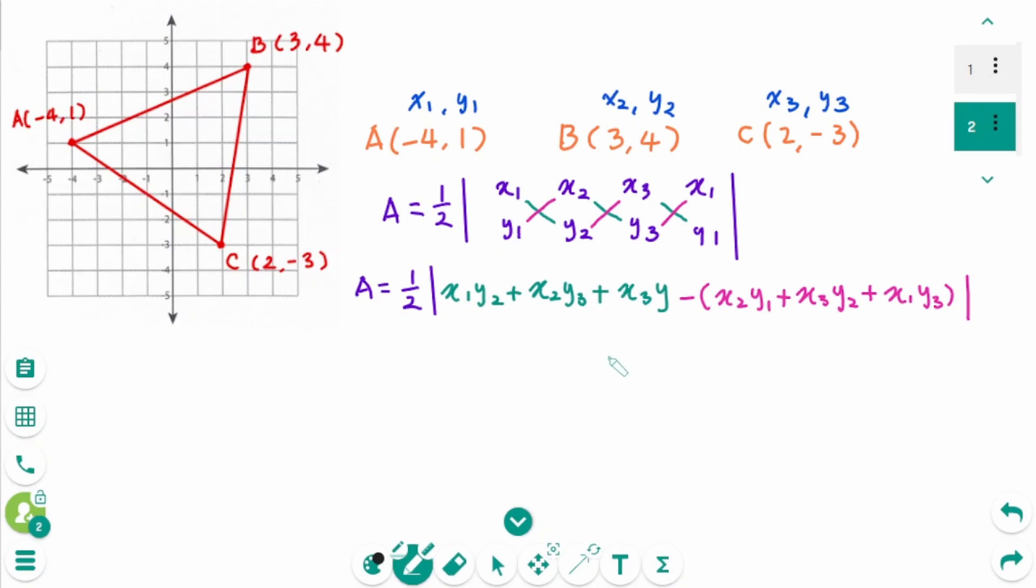It looks very complicated at first glance, but with the actual numbers you can see how easy it is. Shall we try it? Write the ordered pairs vertically.